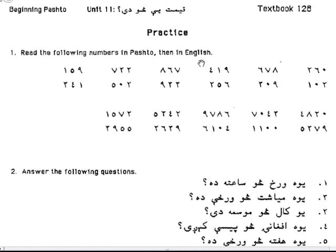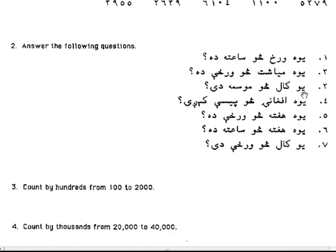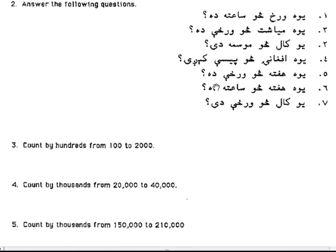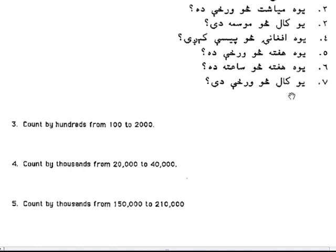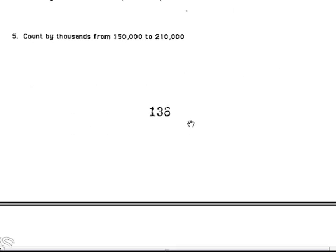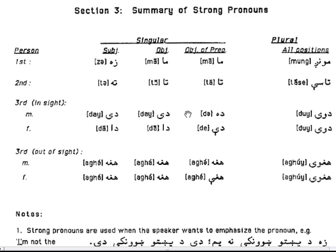Practice: read the following numbers in Pashto and in English. Answer the following questions. One day is how many hours? One month is how many days? One year has how many seasons? One month is how many seconds? One week is how many days? How many days? Count by hundreds from 100 to 2000. Count by thousands from 20,000 to 40,000. Count by thousands from 1,150,000 to 2,010,000.